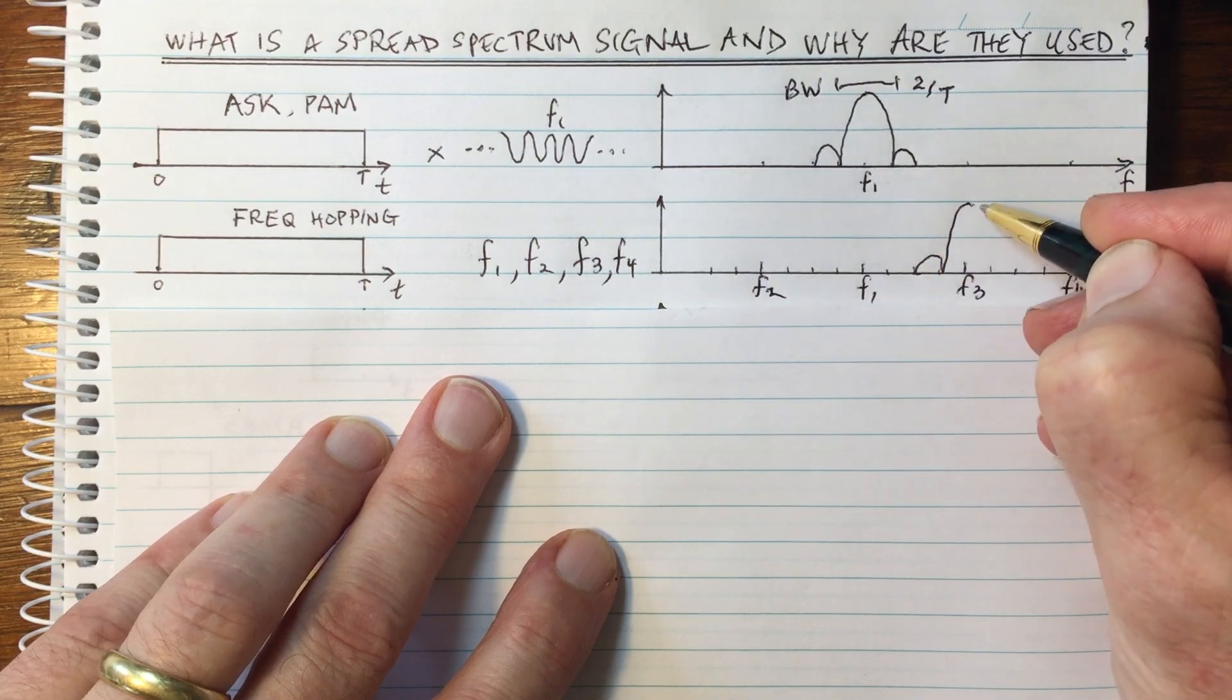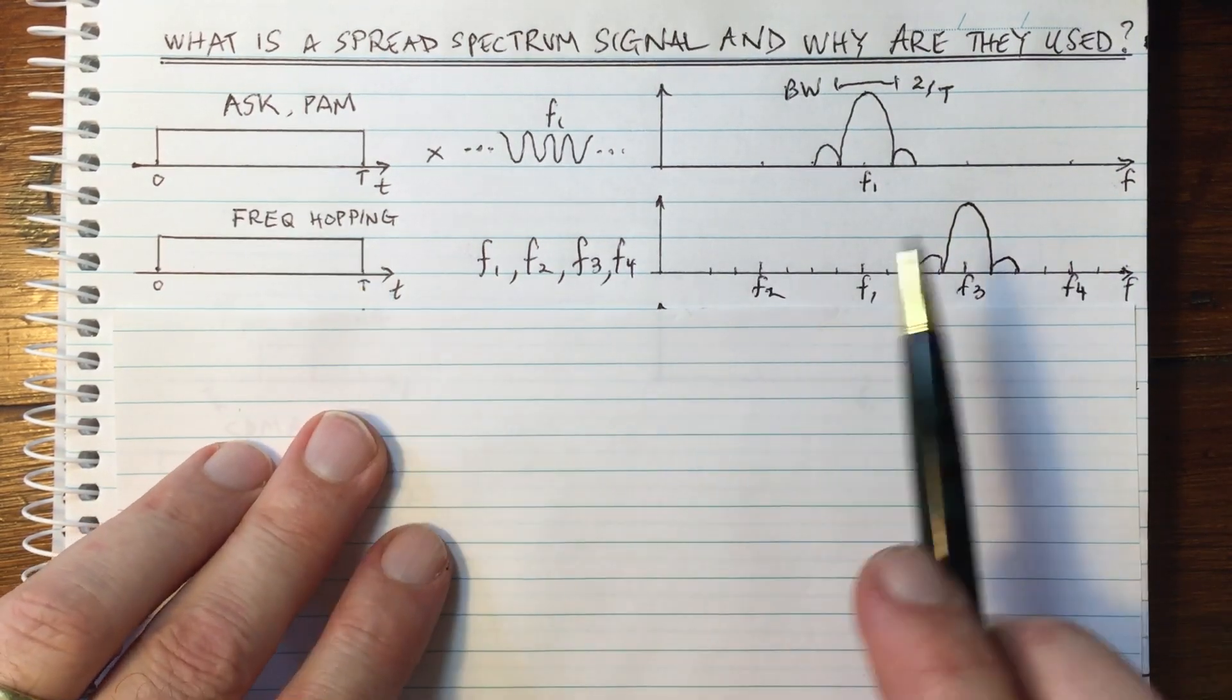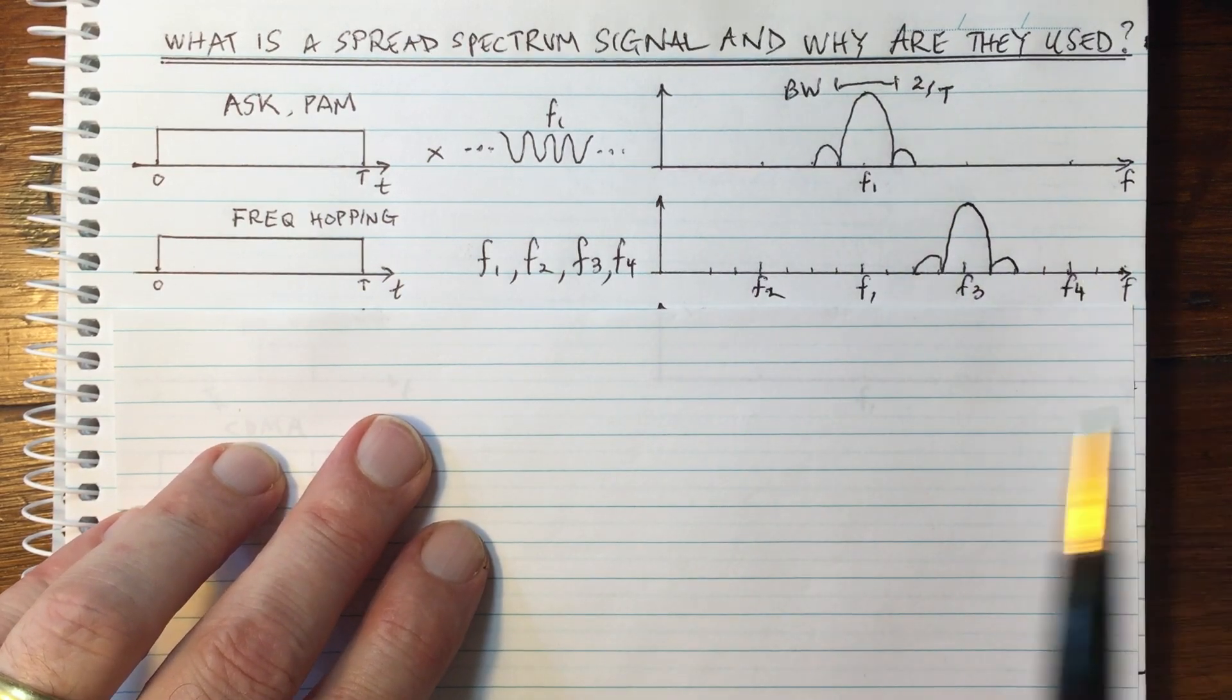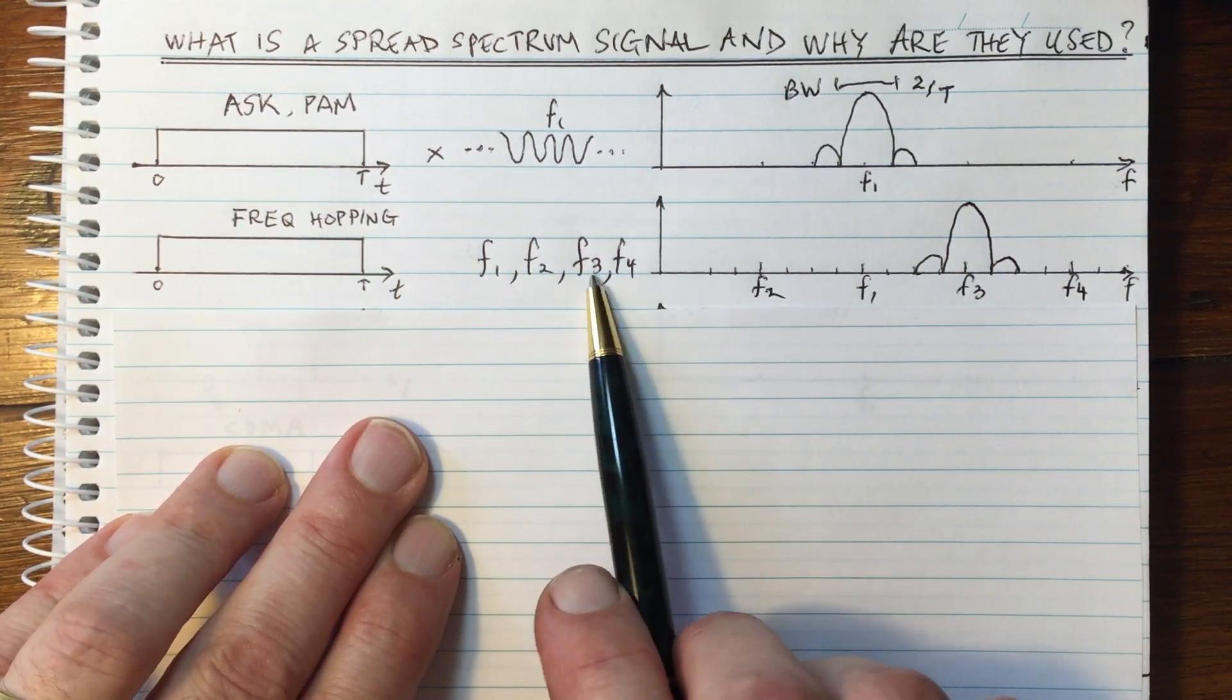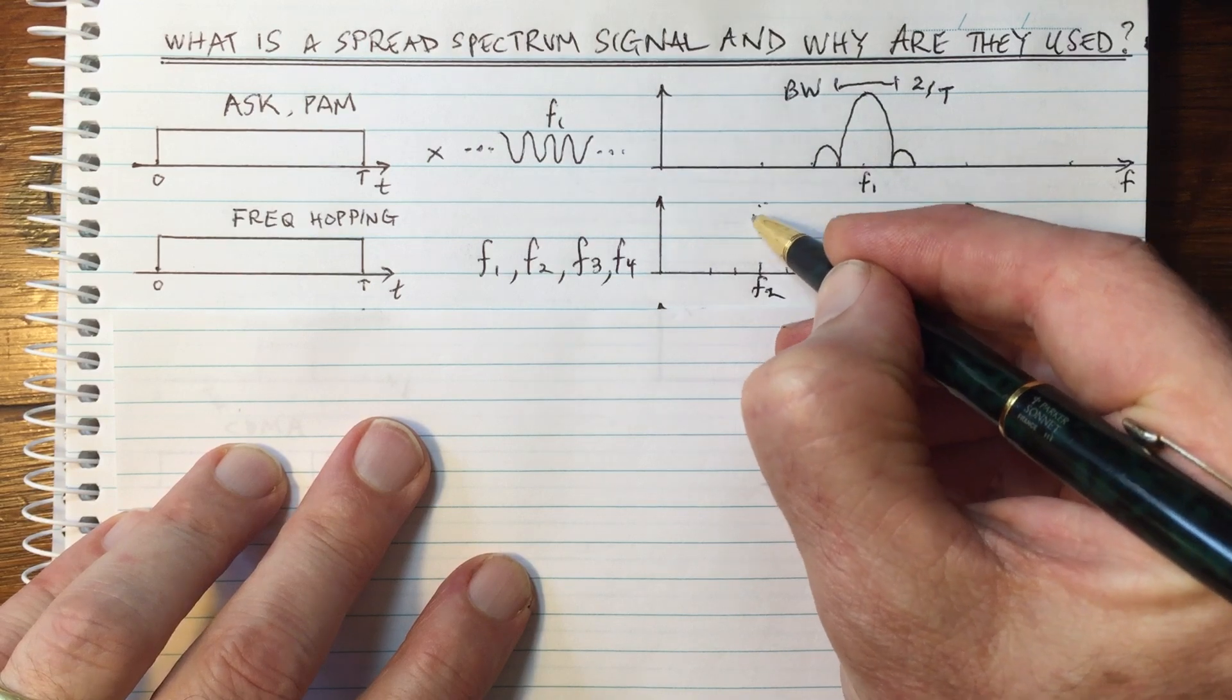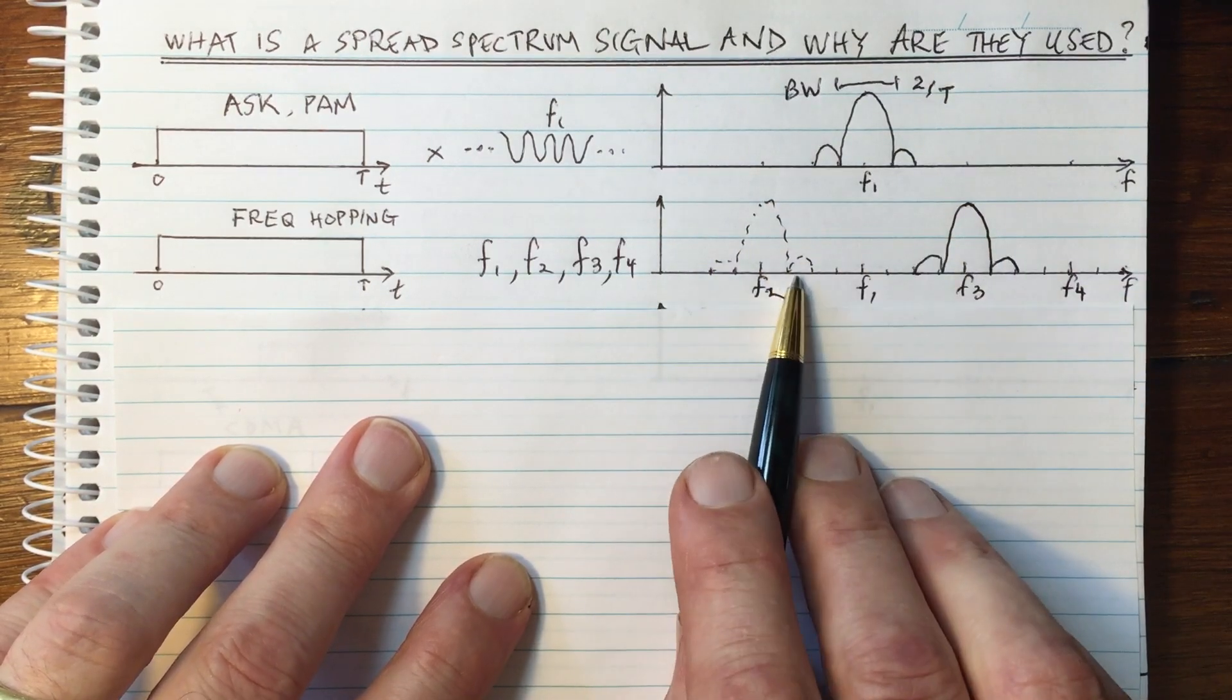So then in the frequency domain, at that time, for that first symbol that's being sent, this would be what the frequency domain spectrum would look like. But in the next symbol time slot, if we jump to a new frequency, perhaps it might have been F2, then in the second time slot, the frequency would have been here. The spectrum would have looked like this.